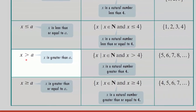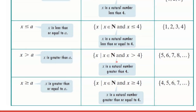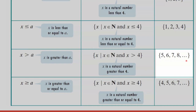This symbol is the greater than symbol, read as x greater than a. This set — x such that x is an element of the set of natural numbers and x greater than 4 — means x is a natural number greater than 4. Using the roster method, this set contains 5, 6, 7, 8, and so on.